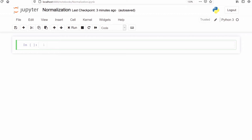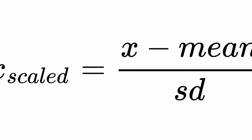Let's look at the formula of normalization. We have to calculate the mean and standard deviation of our data. Standard deviation is the square root of variance, so instead of calculating standard deviation directly we will calculate variance and take its square root. Then we will subtract each data point from its mean and divide by the standard deviation so that all the values will become normalized.